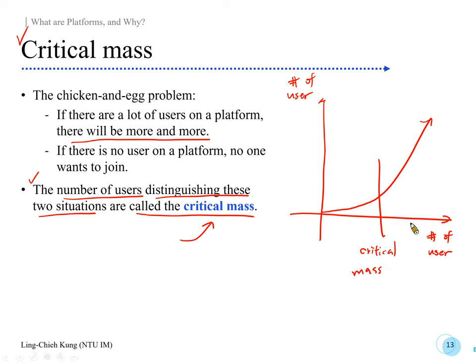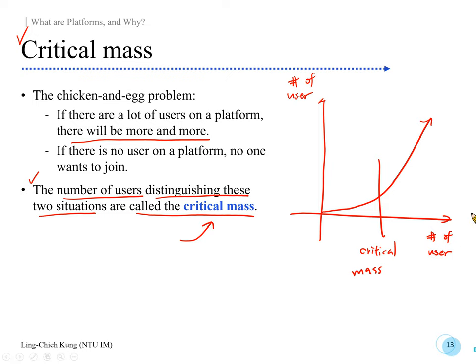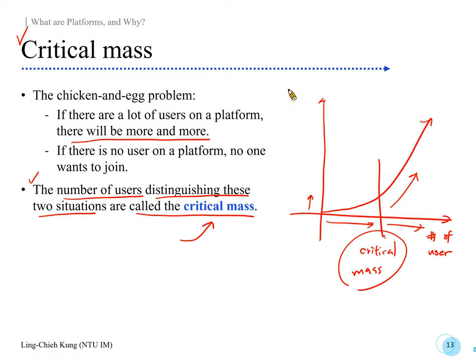You may wonder what it means to have the same thing on both axes — that's just a conceptual diagram. When you reach a certain stage, before that point the accumulating speed is not so fast, but after that you get to a new stage. We call that cutoff point your critical mass. You may also frame this as revenue or something else — the concept is similar.